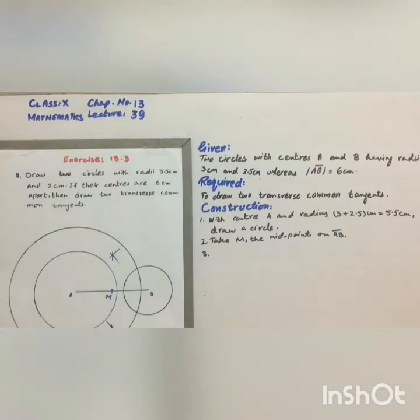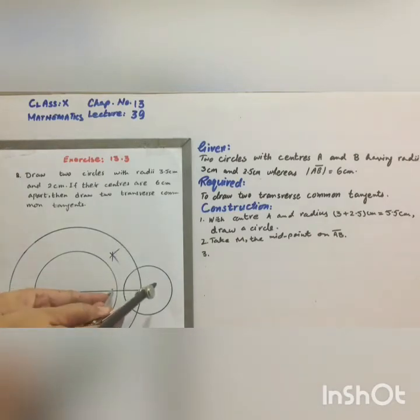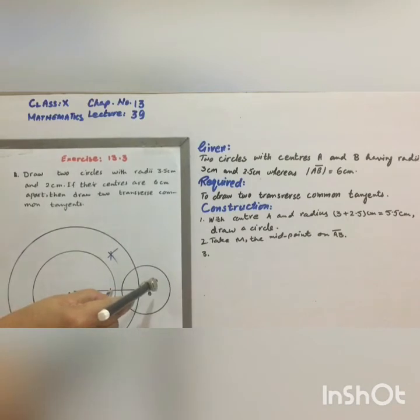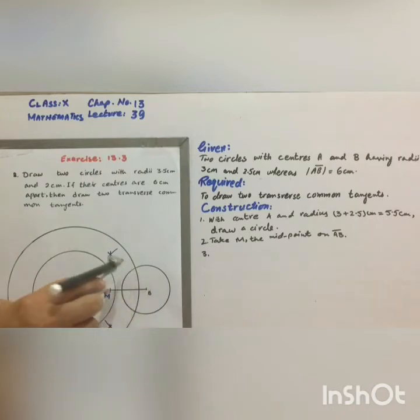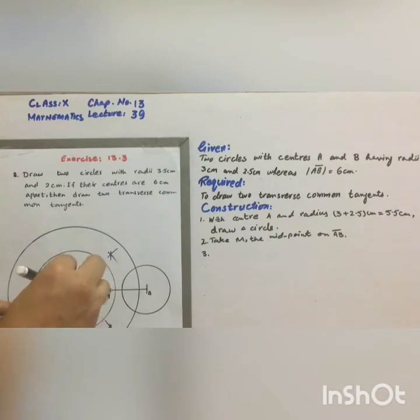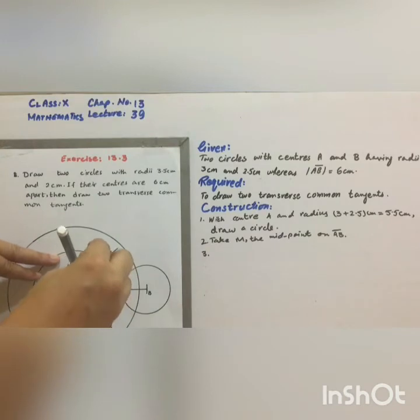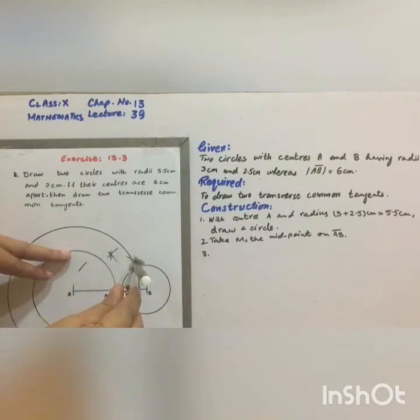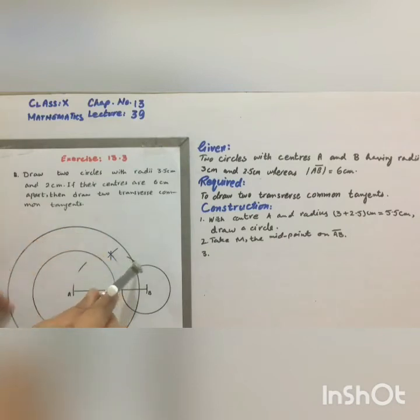With center M and radius MA or MB, we will draw another circle but this one will be a dotted circle. With center M and radius MB or MA, draw a circle and now be careful. This circle must cut the third circle which is the largest circle with center A.